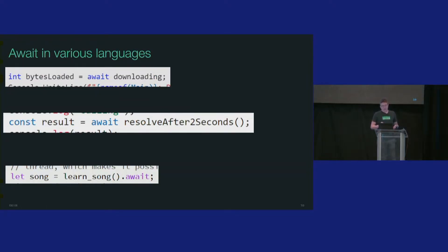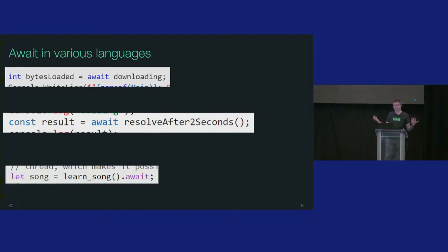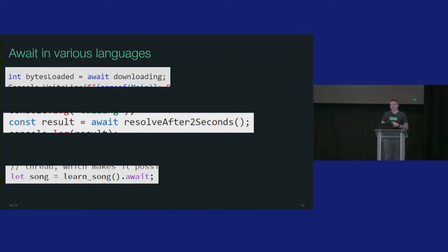Now, if you talk about the await part of async/await: in C# you have an integer that's awaiting something called downloading. In JavaScript, you await resolve after two seconds. But in Rust, you say 'LearnSong.await' — it looks like a method. It's not a prefix keyword. This was rough.